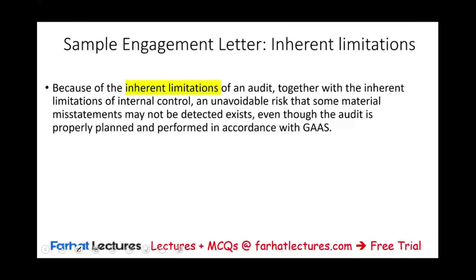We must also mention inherent limitations. Because of the inherent limitations of an audit, there is an unavoidable risk that some material misstatements may not be detected. We could make a mistake — maybe the sample we selected was not representative, or if it was representative, we misinterpreted the results. This could happen even if we planned and performed the audit properly according to GAAS. We could still make a mistake.